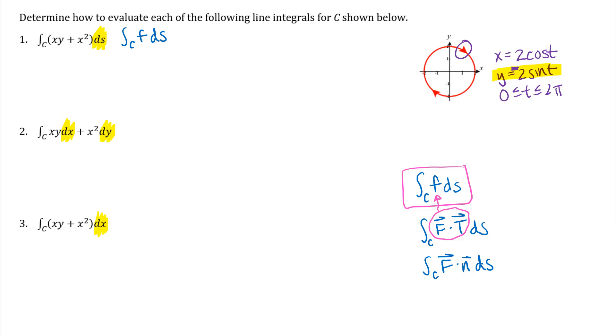Alright so when I set up my integral of f ds I'm just going to convert everything to t values. So 0 to 2 pi. My f function in place of my x and y I'll just substitute in my equations from my curve. So in place of xy I'll have negative 4 cosine t sine t and then plus and then in place of x squared I'll have 4 cosine squared t.